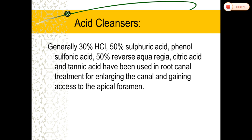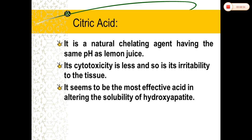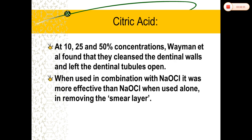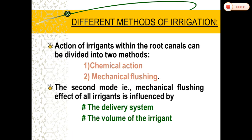It has acid cleansers like sulfuric acid, phenol, and sulfonic acid. Tannic acid — 25% of it — is used as a cleansing agent. Citric acid is a natural chelating agent. It is a form of EDTA substitute which is mainly used to remove the smear layer.